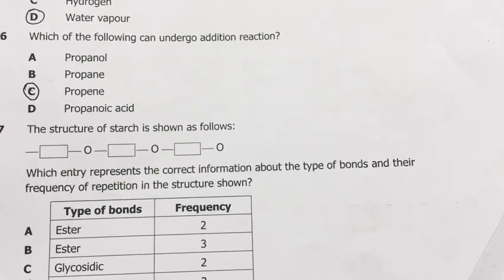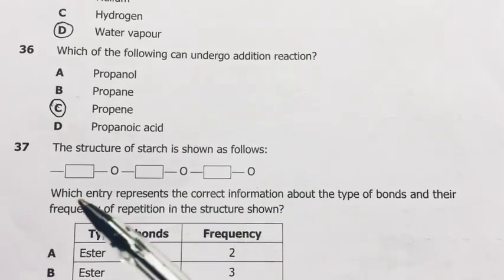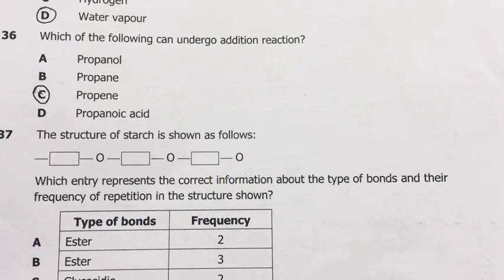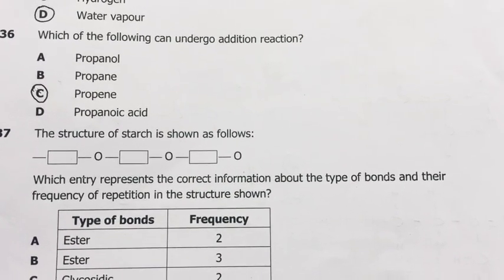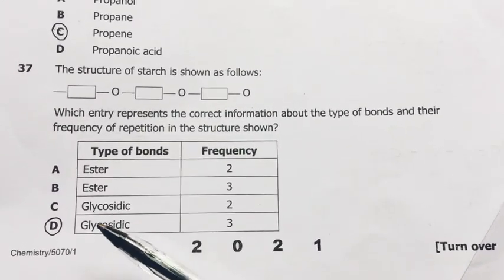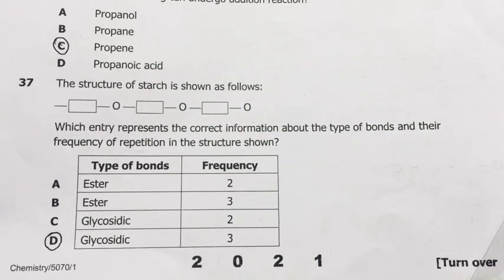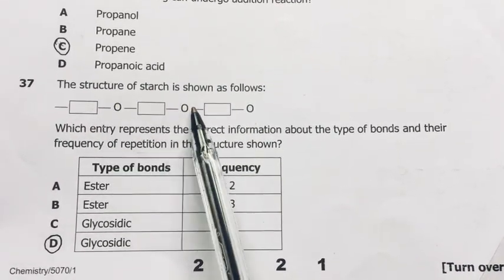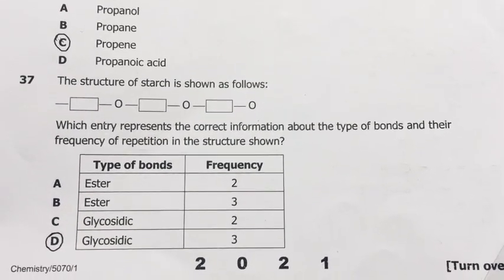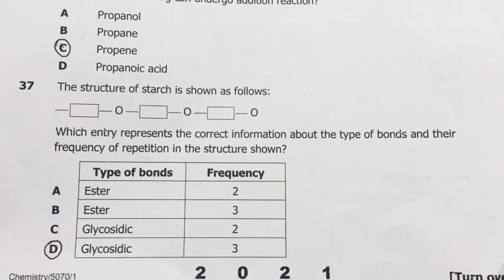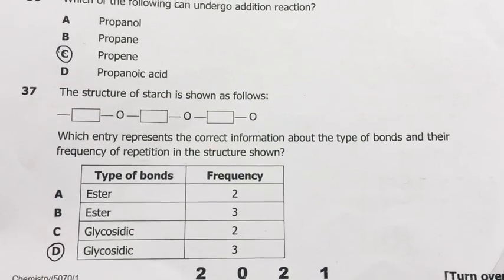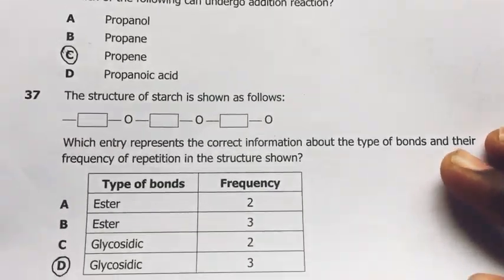Number 37. The structure of starch is shown as follows. Oxygen, body, oxygen, body of a molecule. Which entry represents the correct information about the type of bonds and their frequency of repetition in the structure as shown? The type of bond is glycosidic. Frequency of repetition, I think they have shown three of them. This is 1, 2, then this here, plus this other one here, making them 3. That's the frequency in which they have been repeated. They have shown three of them. So my take was this one.